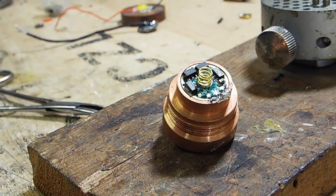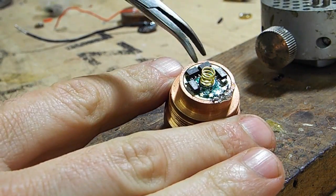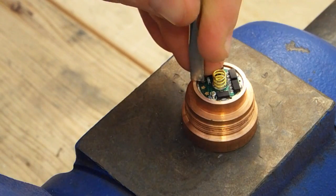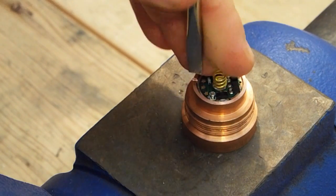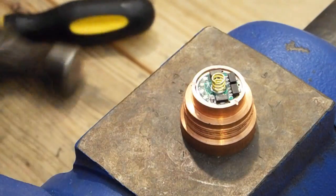One of the more common places flashlight modders will run into this is when they're trying to solder a driver board into a pill. Typically, I just crimp the rim of the pill in this situation, but if you really feel like you need to solder the board in, here's some tips that can help.